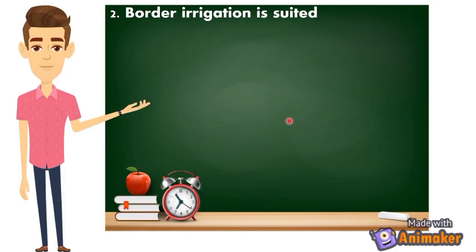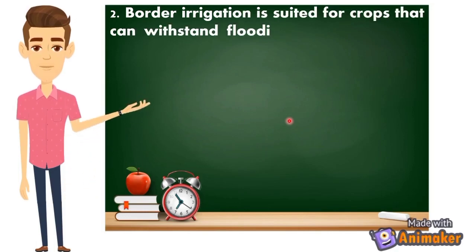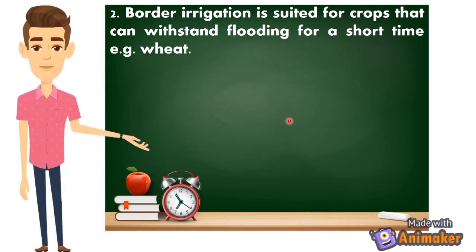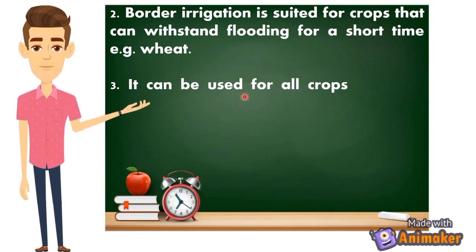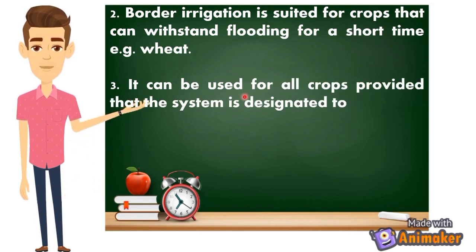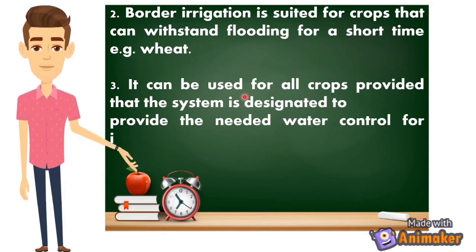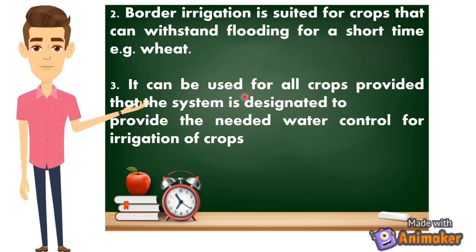Border irrigation is suited for crops that can withstand flooding for a short time — mas maganda yung parang binabaha, okay lang, walang problema. For example, wet crops, or kahit yung sa mga rice natin, pwede sya sa border irrigation system. It can also be used for all crops provided that the system is designated to provide the needed water control — kailangan nating bantayan at kontrolin kung gaano karami yung papasok na tubig sa ating field.